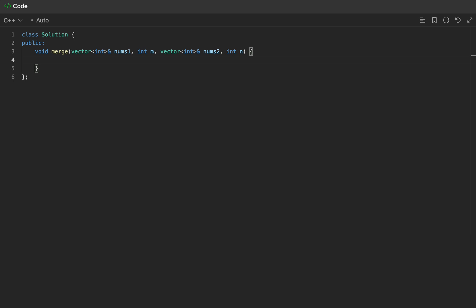First, let's initialize our pointer variables. a will be at the index of the last number that's not a 0 in our nums1 vector. b will be the index of the last number in our nums2 vector. And i will be the index of the last number in our nums vector. If you remember the equation, it's just m plus n minus 1.